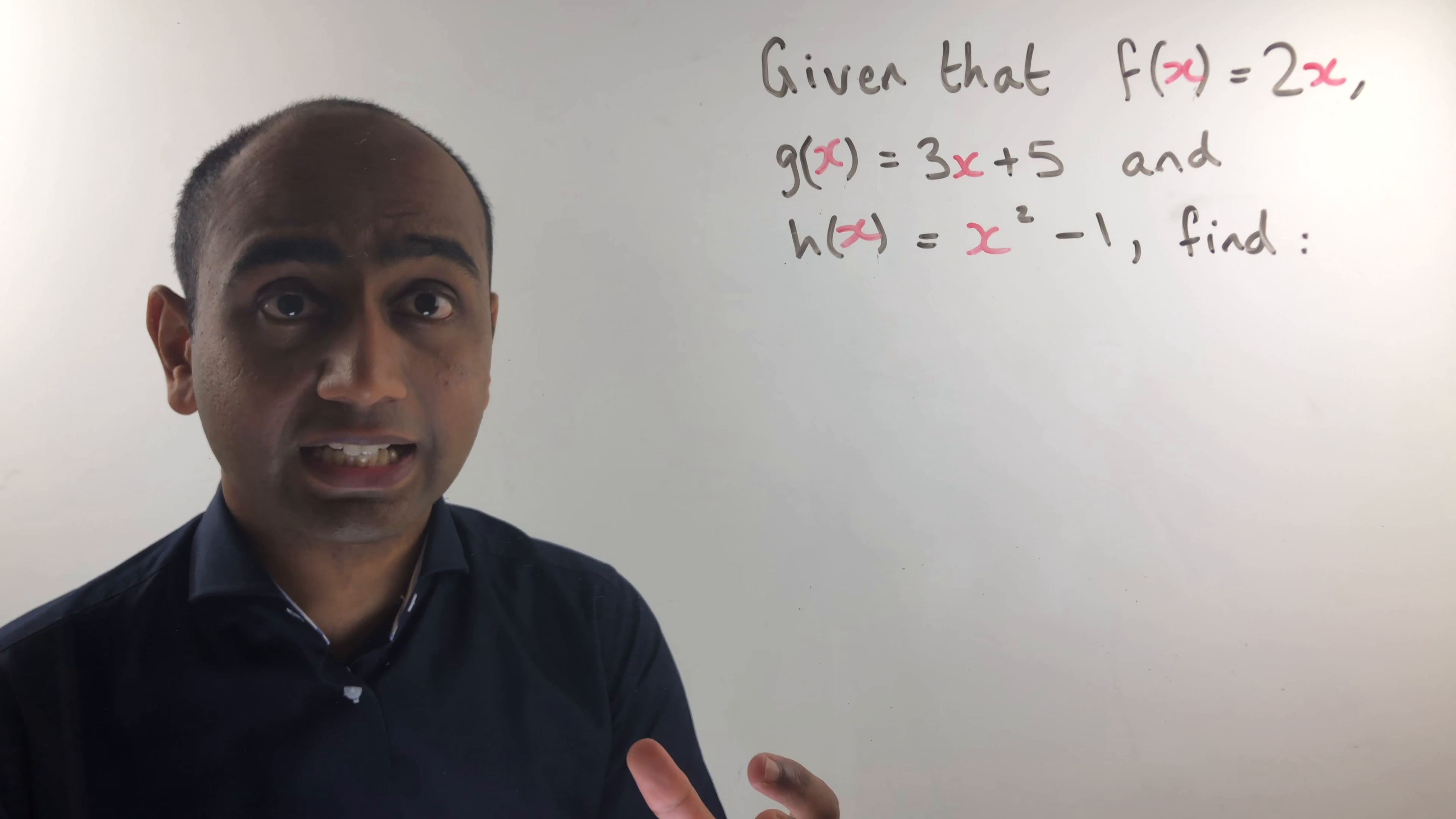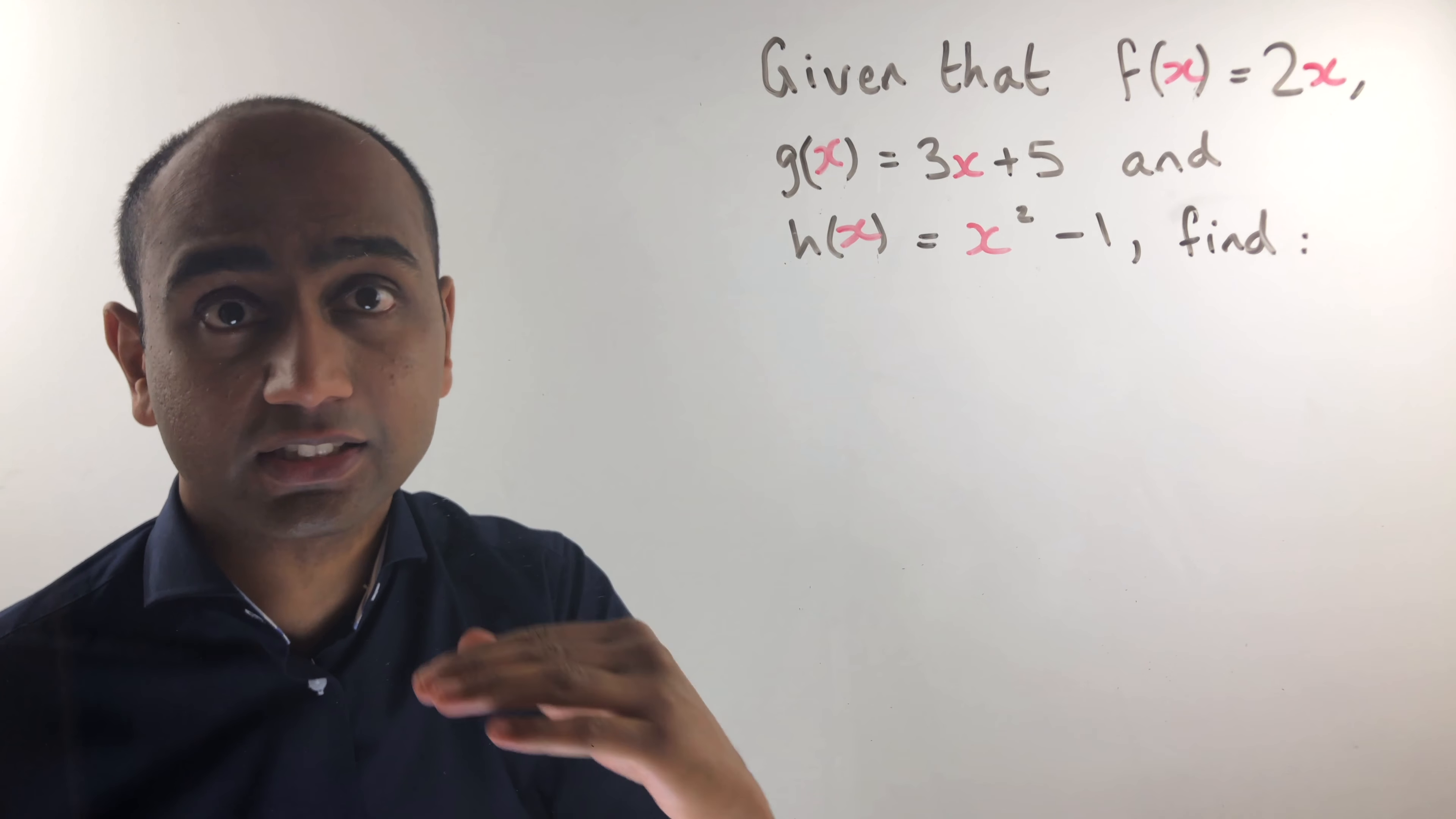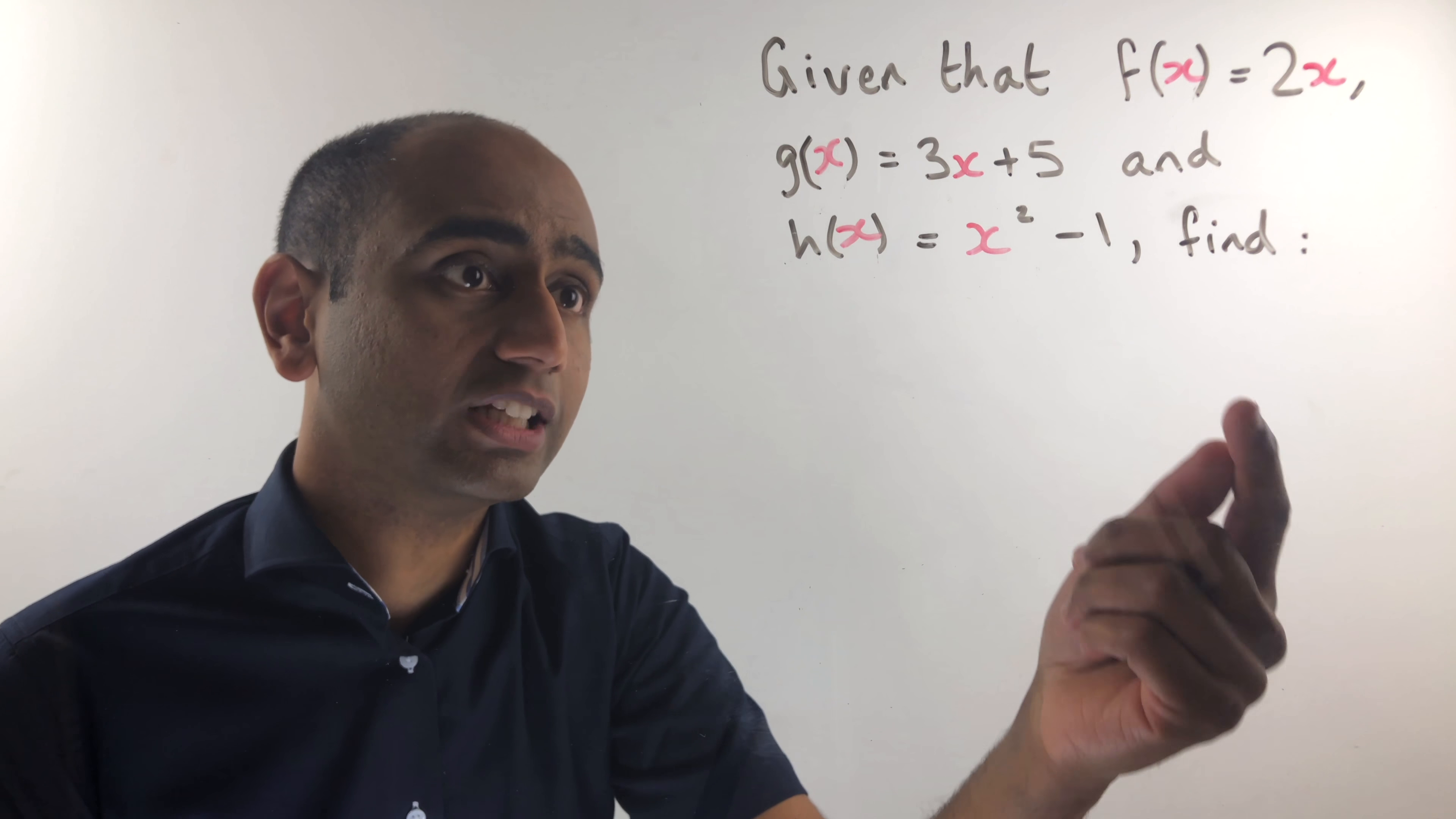So what we've looked at in this video is composite functions. We can do a function of a function and remember the order matters. So fg of x is not the same as gf of x and we saw in example b that you can have something like ff of x. So you could input something into f get that output and use that as an input into f again.